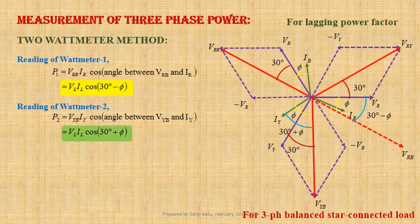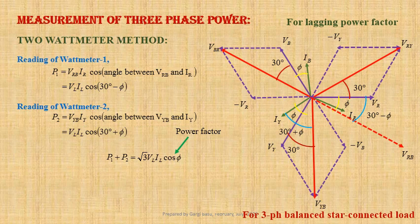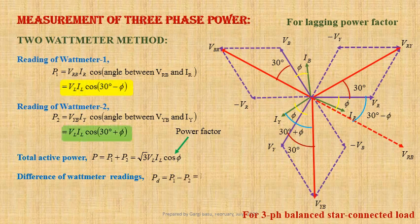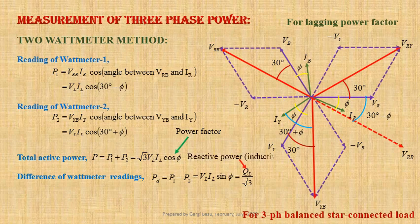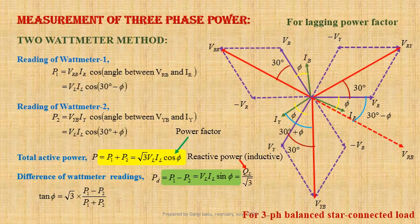By adding the two wattmeter readings, we get P1 plus P2 equals root 3 times VLIL cos φ, where cos φ is the load power factor. Therefore, the summation of these two wattmeter readings gives us the total active power P. The difference of wattmeter readings, Pd equals P1 minus P2, equals VLIL sin φ, which may be written as QL divided by root 3, where QL is the total reactive power (inductive). From these two equations, we get tan φ equals root 3 times (P1 − P2) divided by (P1 + P2), from which we can determine the power factor angle φ.